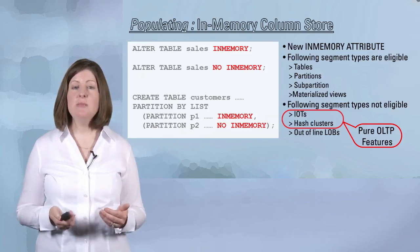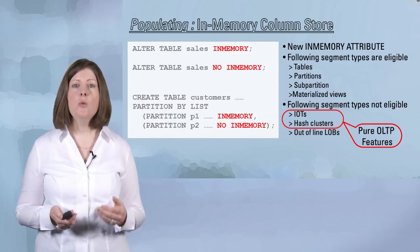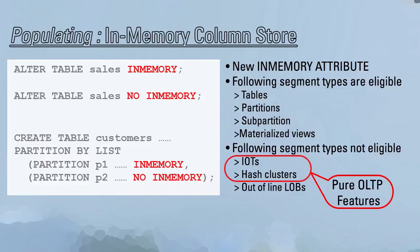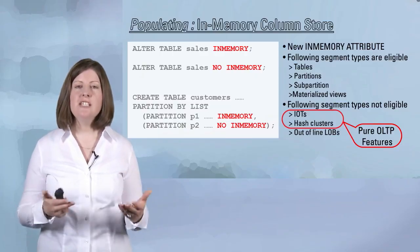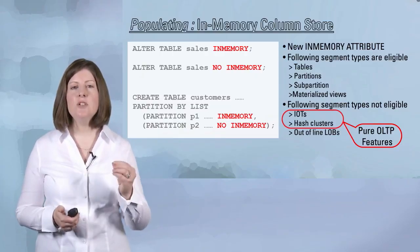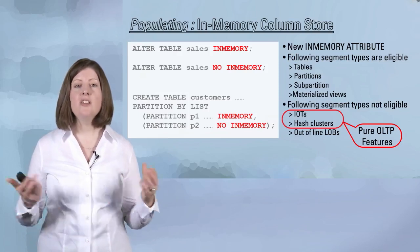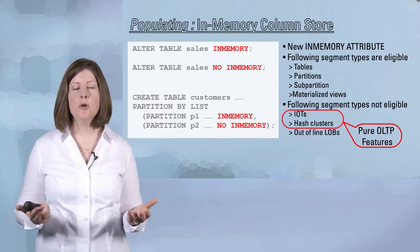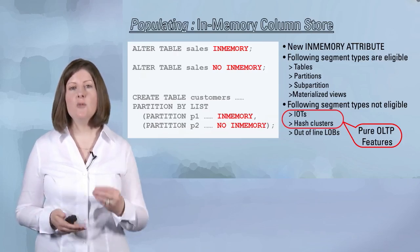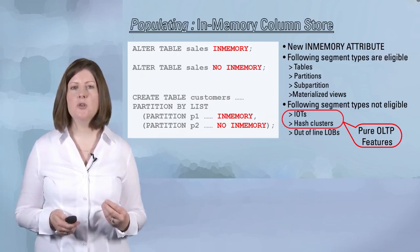Are there any objects that can't be populated into the column store? There are just a couple. The IOTs and hash clusters, both of which are more OLTP-focused features, do not get populated into the column store. The reason is that these structures typically enhance access to an individual record rather than an analytical-style query that's going to access lots of rows, so they're not really useful to put in the column store.